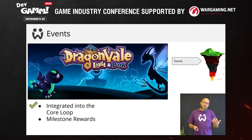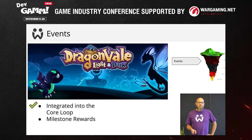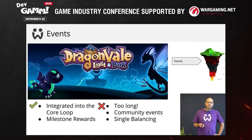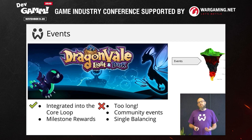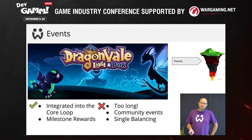Some things we got right: we integrated the event into the core loop, so as you play the game you made progress in an event automatically. We also had some milestone rewards to keep people interested. Some things that didn't go so well: it was just too long — players got bored or they finished early. It was a community event, which meant players were dependent on other people contributing. Nobody feels like they're actually adding much when 100,000 other people are contributing to the same event. And finally, there was a single balancing — you have to get over this idea that there's a single balancing for everybody. That's just not personalization.